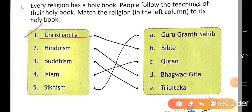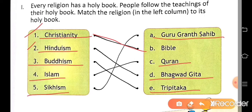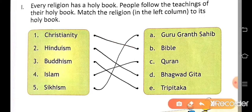Number 1: Christianity — holy book is Bible. Number 2: Hinduism — holy book is Bhagavad Gita. Number 3: Buddhism — holy book is Tripitaka. Number 4: Islam — holy book is Quran. And the last: Sikhism — holy book is Guru Granth Sahib. Like this, you have to match them.